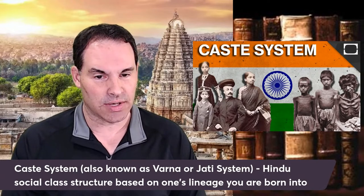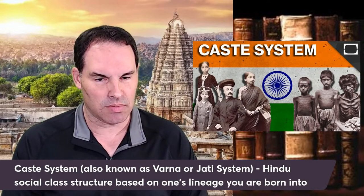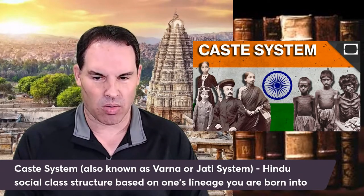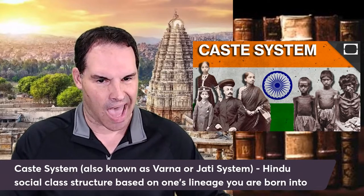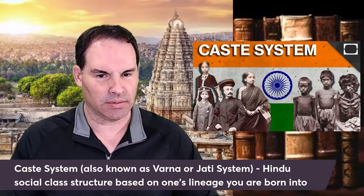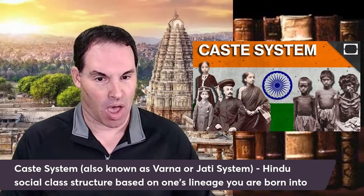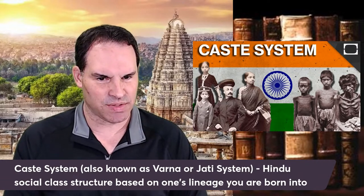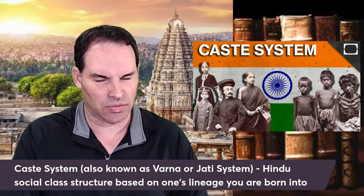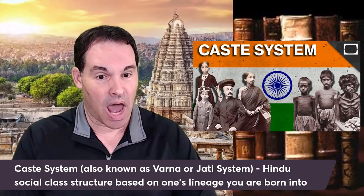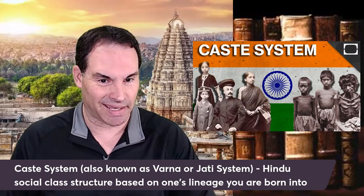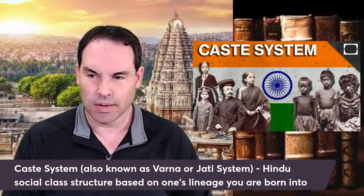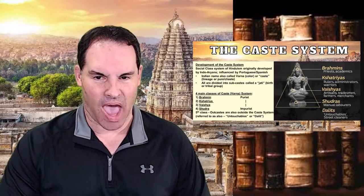The caste system, if you want a definition, is called different names — some people call it the Varna system, also the Jati system. It's mostly a Hindu social class structure which they think developed in India a long time ago, in ancient times. The theory is that it was started by the Indo-Aryans when they came into India over 3,000 years ago. A lot of it is based on your lineage — what birth group you're born into, or Jati.